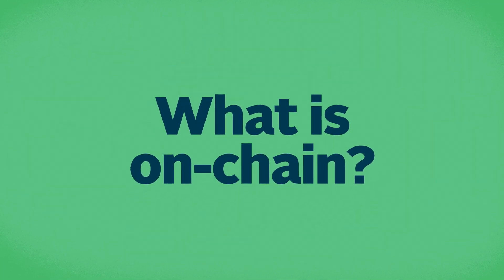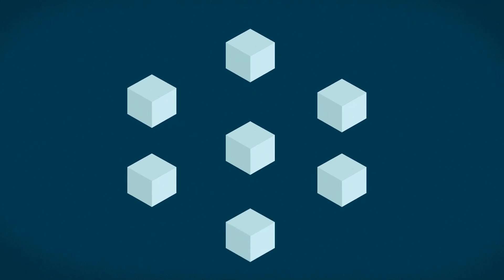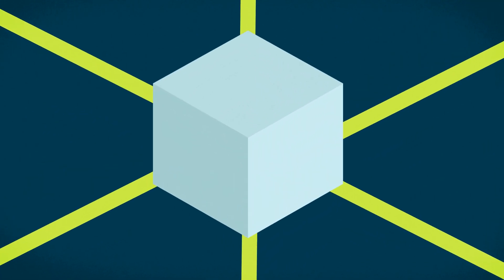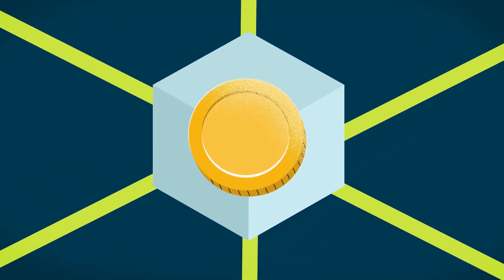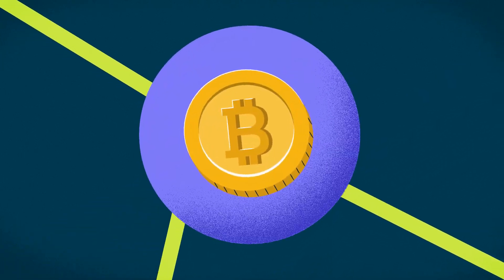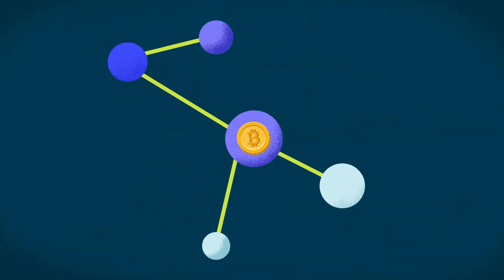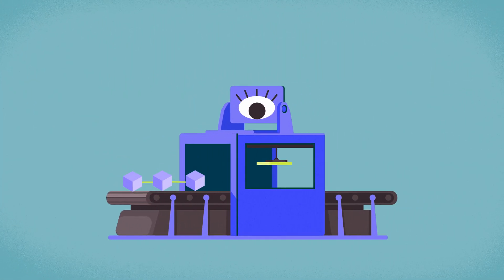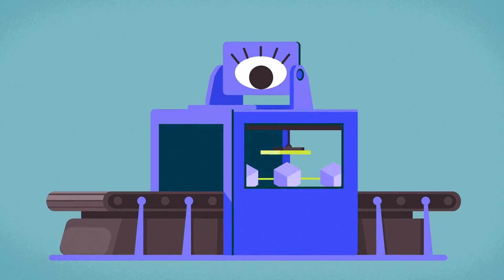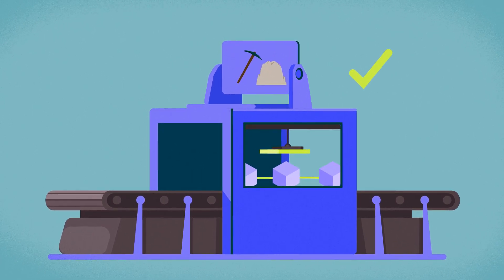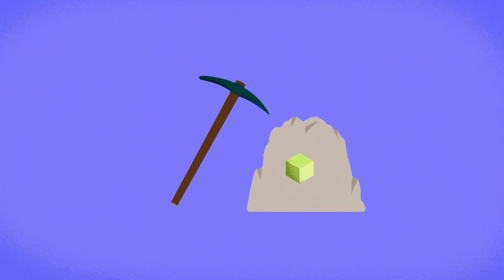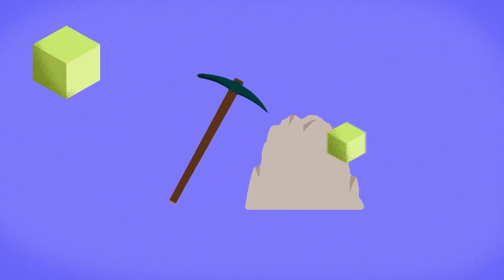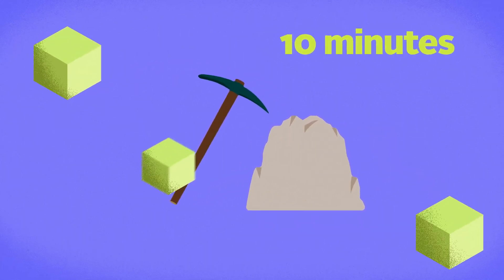What is on-chain? On-chain transactions, as suggested by the name, are transactions that take place directly on the blockchain. Bitcoin is a great example of a decentralized network that does all of its transactions on-chain, from the validation process by network participants to the verification process by miners working round the clock to add new blocks of transactions to the public ledger roughly every 10 minutes.